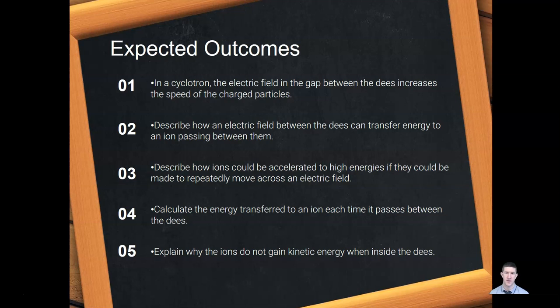This lesson has a few expected outcomes. Firstly, understanding that in a cyclotron the electric field in the gap between the d's increases the speed of charged particles. You're expected to describe how an electric field between the d's can transfer energy to an ion passing between them, describe how ions could be accelerated to very high energies if made to repeatedly move across an electric field, calculate the energy transferred to an ion each time it passes between the d's, and explain why the ions do not gain kinetic energy when inside the d's.